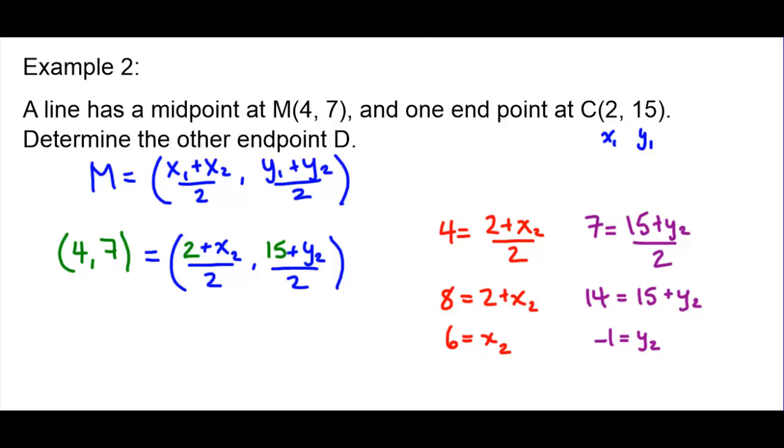And there's our two answers. We have our x value for our endpoint and our y value for our endpoint. So therefore, we can say that our other endpoint D has the coordinates (6,-1).